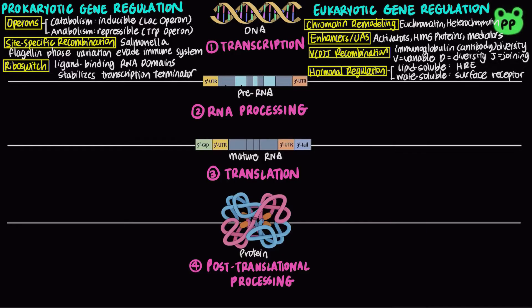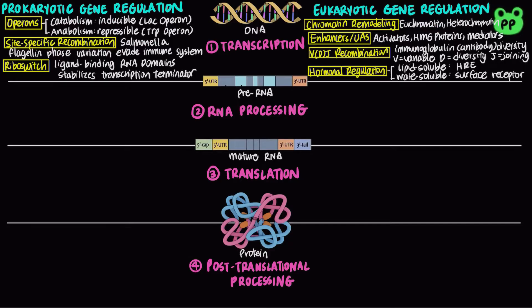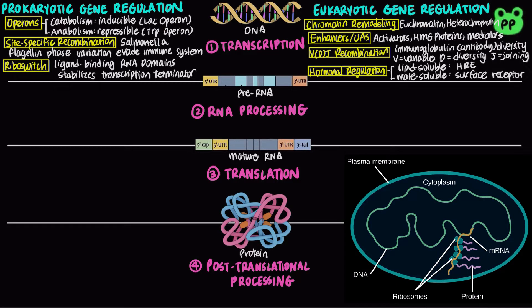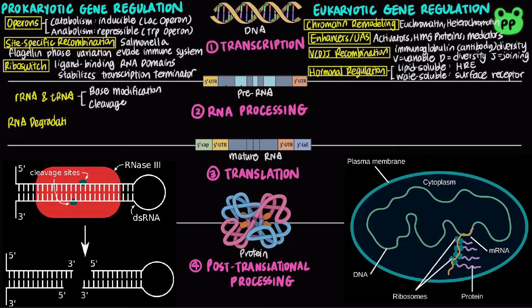Both prokaryotic and eukaryotic RNA processing have been covered in my previous video on RNA processing. To recap, for prokaryotes, mRNA transcription is coupled to translation. Therefore, there is no RNA processing of mRNA. Prokaryotic rRNA and tRNA are derived from a single 30S pre-RNA transcript that undergoes base modifications and RNA cleavage to produce the mature rRNA and tRNA. RNA degradation can ensure RNAs don't build up in the cell and prevent synthesis of unnecessary proteins.